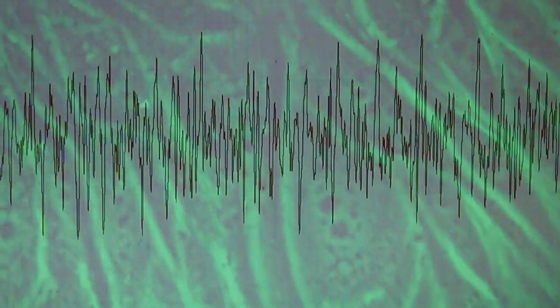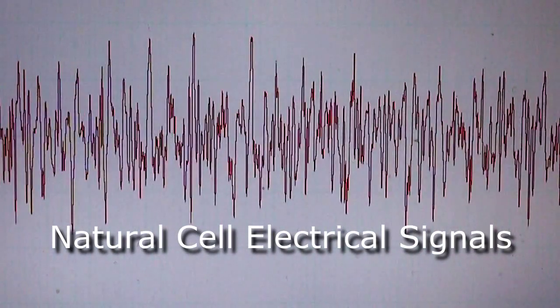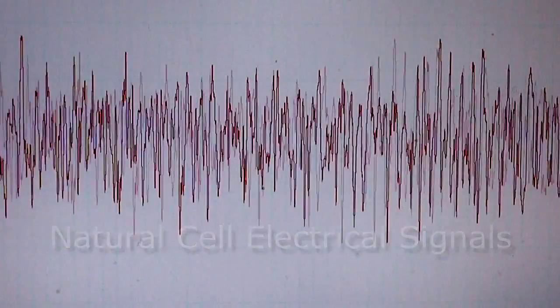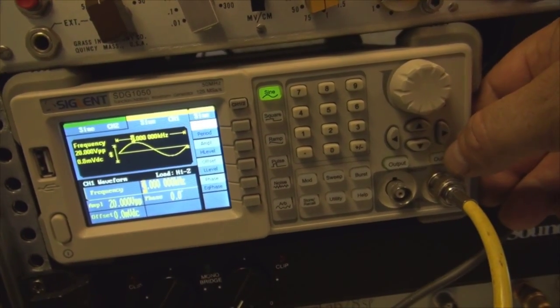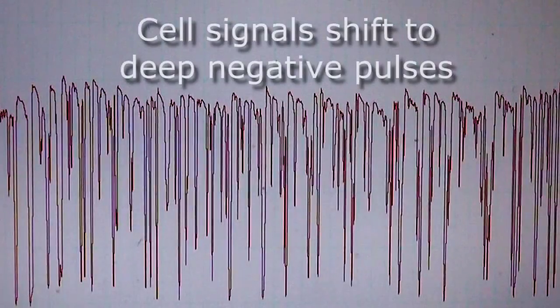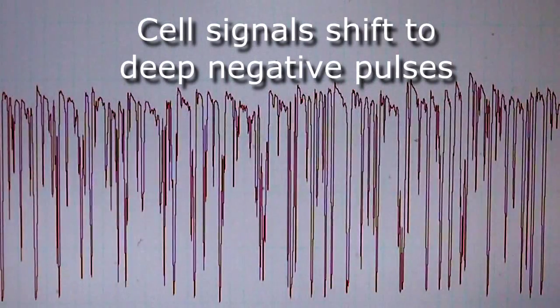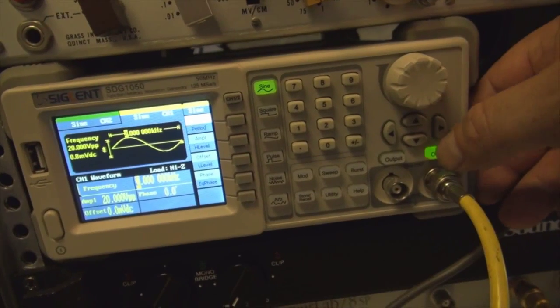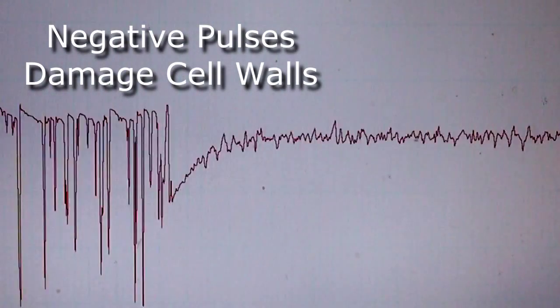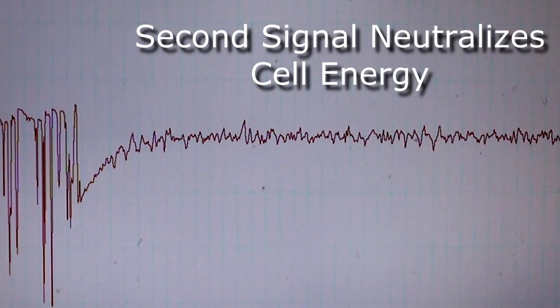Here we see typical electrical signals representing cancer cell metabolic activity. We trigger a specific signal that immediately causes the cells to overload their activity with dramatic negative pulses. A second signal clamps the cell's energy to a fraction of normal amplitude. You now see a significant increase in dead rounded up cells.